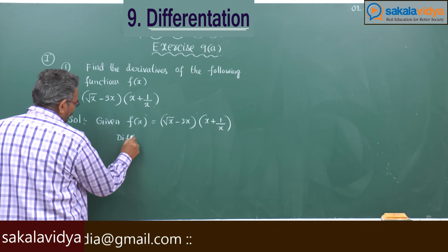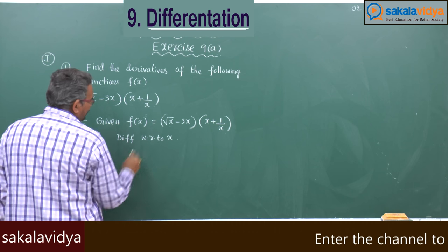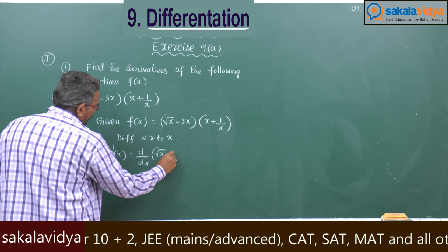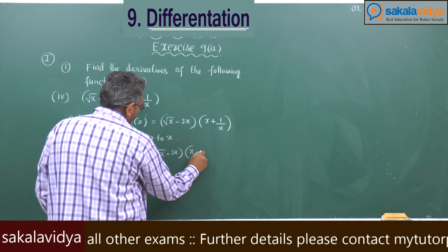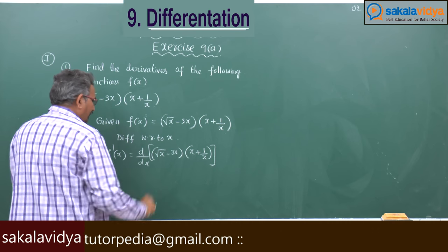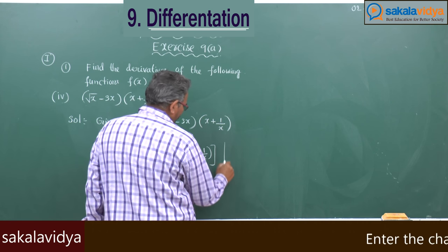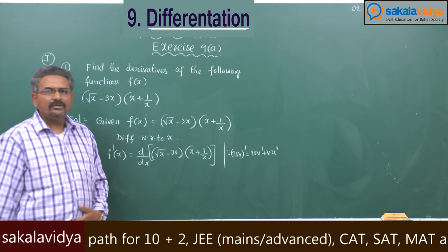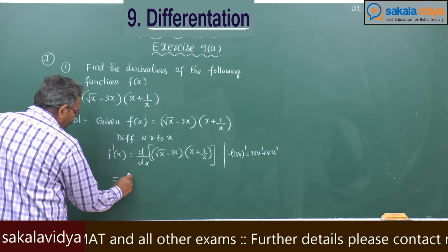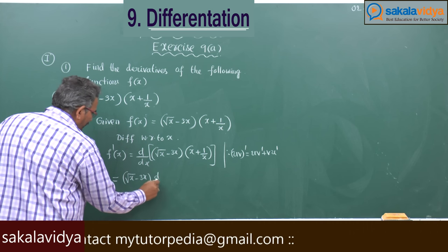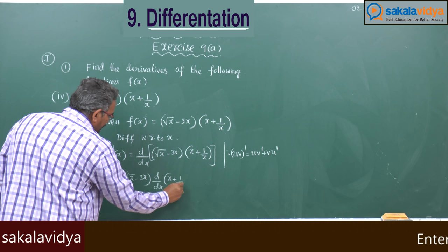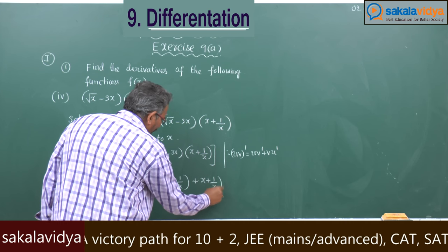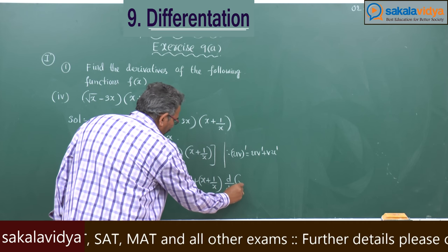Applying the UV rule: f'(x) equals (root x minus 3x) into d/dx of (x plus 1/x), plus (x plus 1/x) into d/dx of (root x minus 3x).